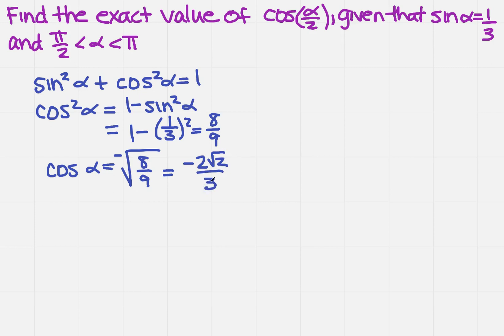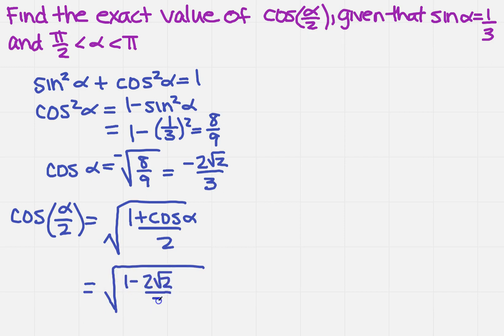So now I can use my half-angle formula, which says that the cosine of alpha over 2 equals the square root of 1 plus cosine alpha divided by 2. So now we've found the value of cosine of alpha, correct? So this simplifies to 1 minus 2 square root of 2 over 3, the whole thing over 2.